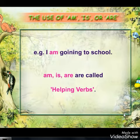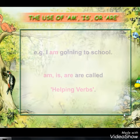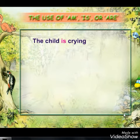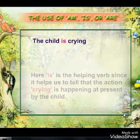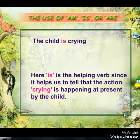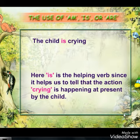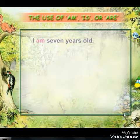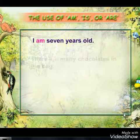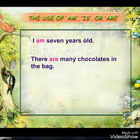Now let us study some more examples. The child is crying. Here, is is the helping verb since it tells us that an action — crying — is happening at the present by the child. I am seven years old. There are many chocolates in the bag.